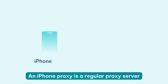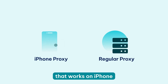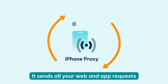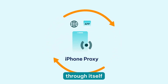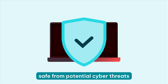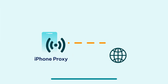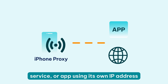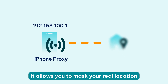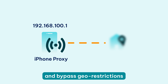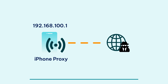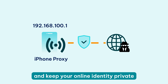An iPhone proxy is a regular proxy server that works on iPhone and other iOS devices. It sends all your web and app requests through itself, keeping your data and device safe from potential cyber threats. Since it connects you to the desired website, service, or app using its own IP address, it allows you to mask your real location and bypass geo-restrictions. As long as your proxy is active, you can browse the web anonymously and keep your online identity private.